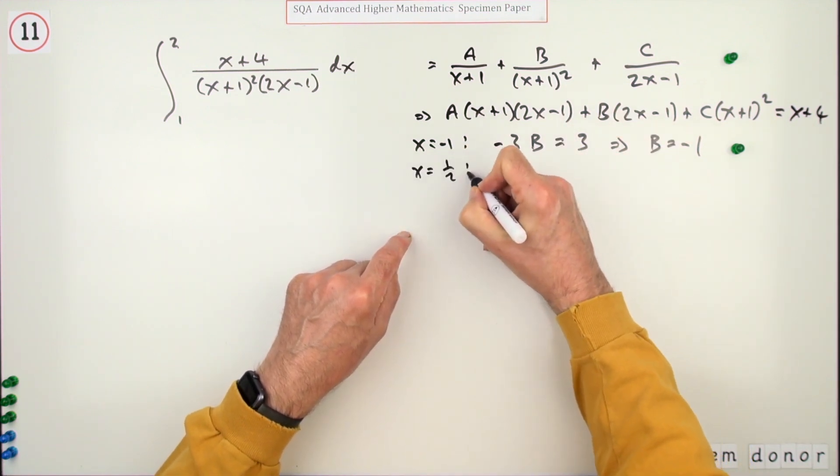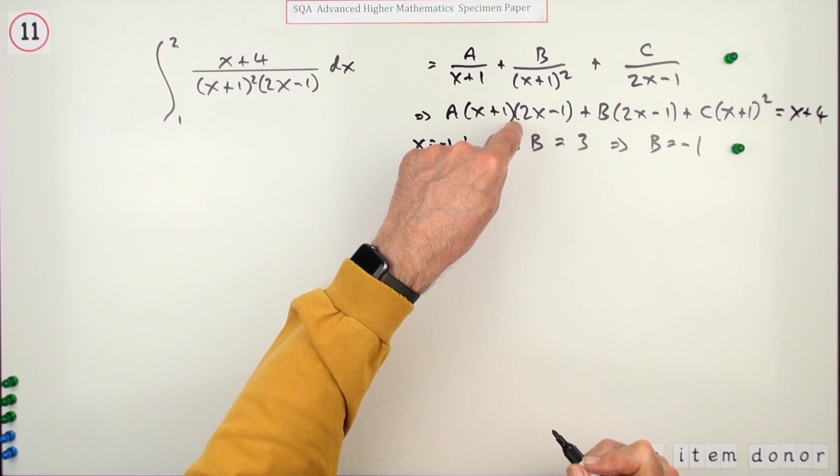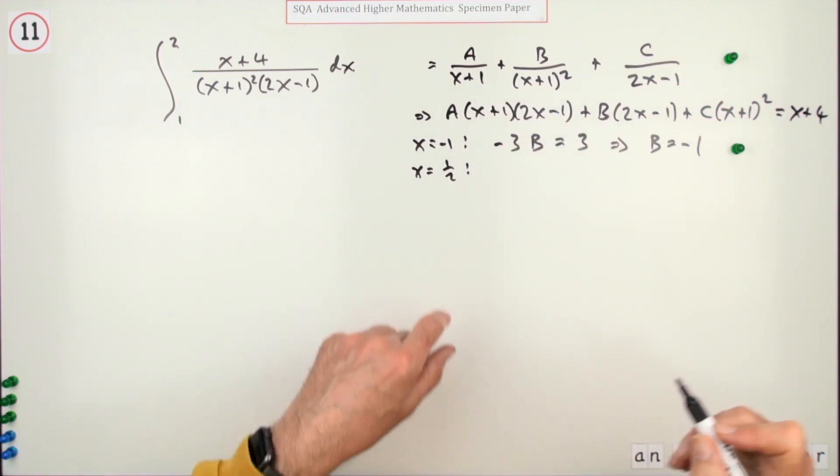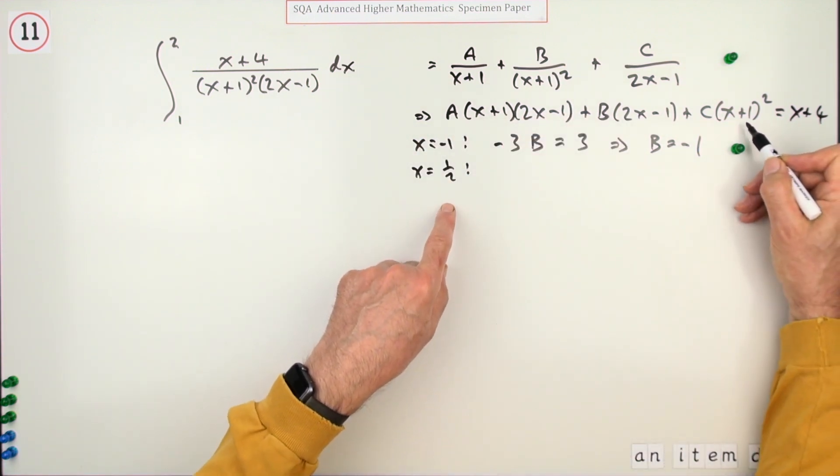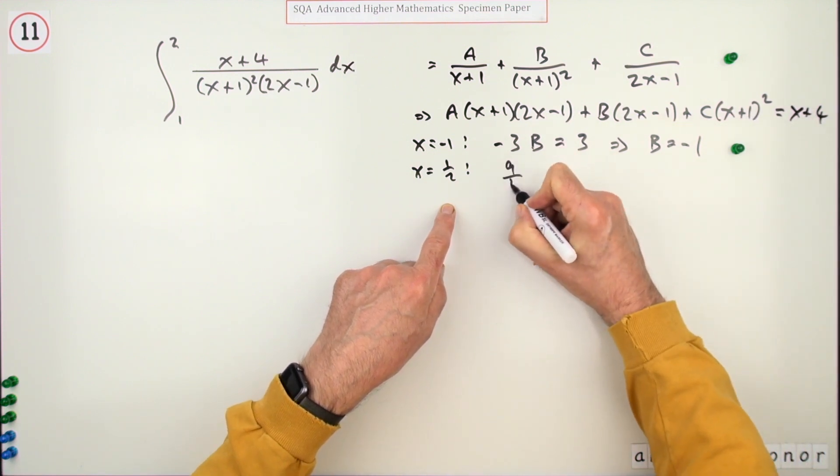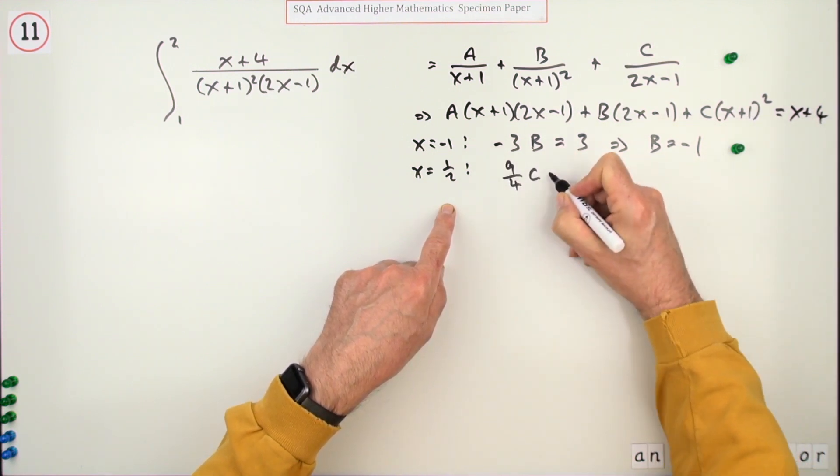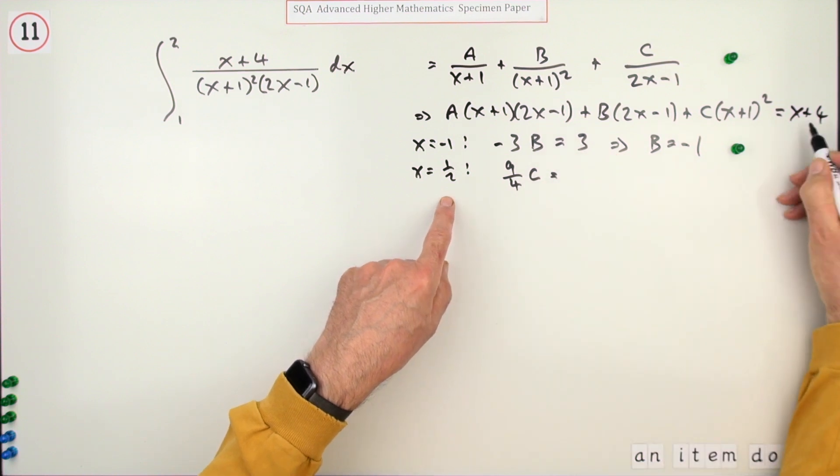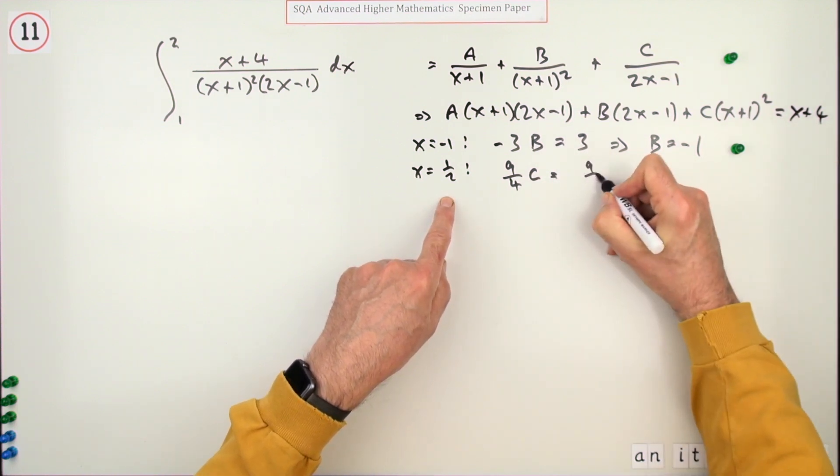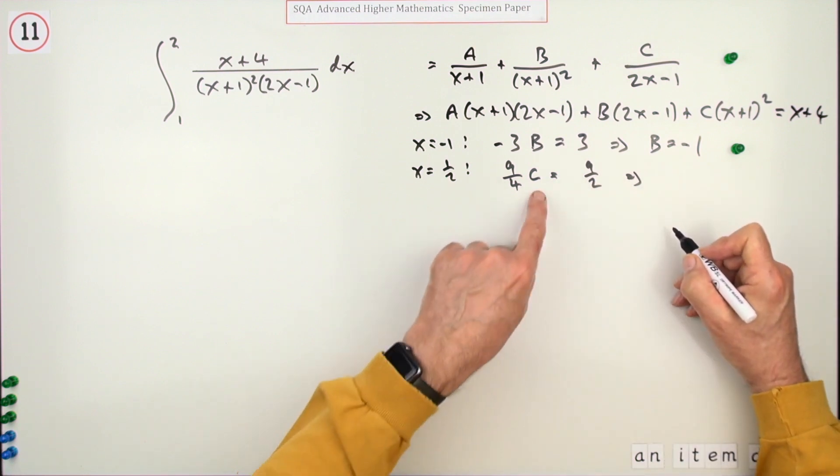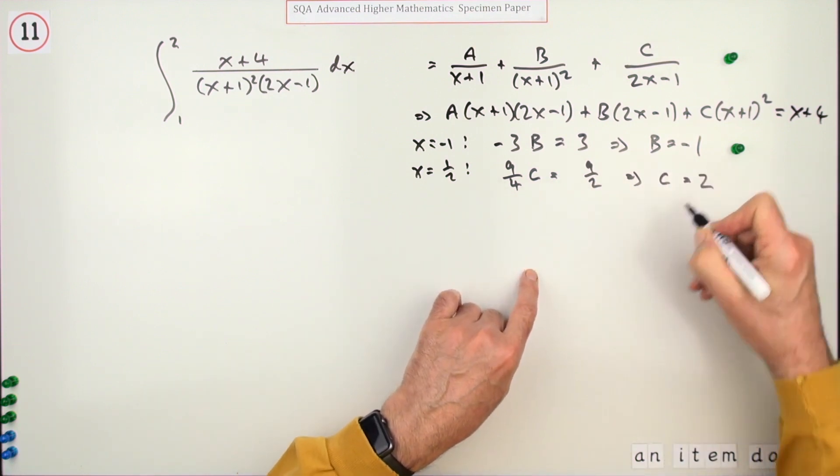Another one that can get knocked out is by choosing x=1/2. At x=1/2, that disappears and that disappears. You'll be left with an awkward little number here because that's going to be 3/2 squared, so that's 9/4. C is equal to 9/2. That's just double that, so C=2.